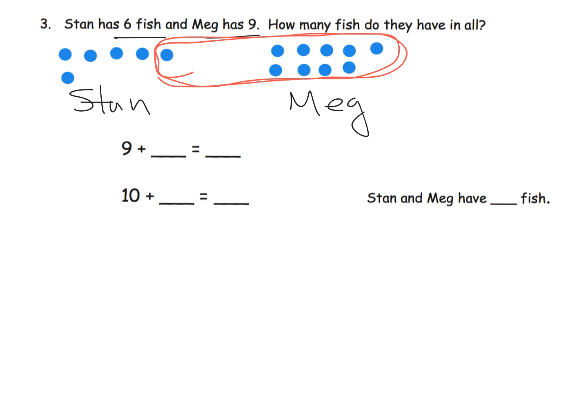How are we going to fill in our number sentences? It's going to be 9 plus 6. I'm going to hold off on that answer because let's say I don't know my answer quite yet. But I can see that we took the 9 and we added one more to make 10, so there's our 10. That means over here we had 5 left over, so that's going to be 10 plus 5. Oh, 10 plus 5 is 15. That means 9 plus 6 is 15. Stan and Meg have 15 fish.